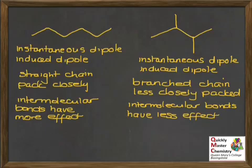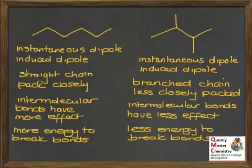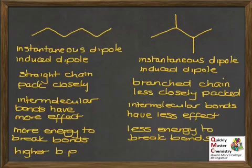We're now back on familiar territory and can talk about energy. For the hexane on the left, more energy is needed to break the intermolecular bonds between the molecules. For the branched 2,3-dimethylbutane on the right, less energy is needed to break the intermolecular bonds. And so finally, we can reach our conclusion: the hexane will have the higher boiling point, and the 2,3-dimethylbutane will have the lower boiling point.